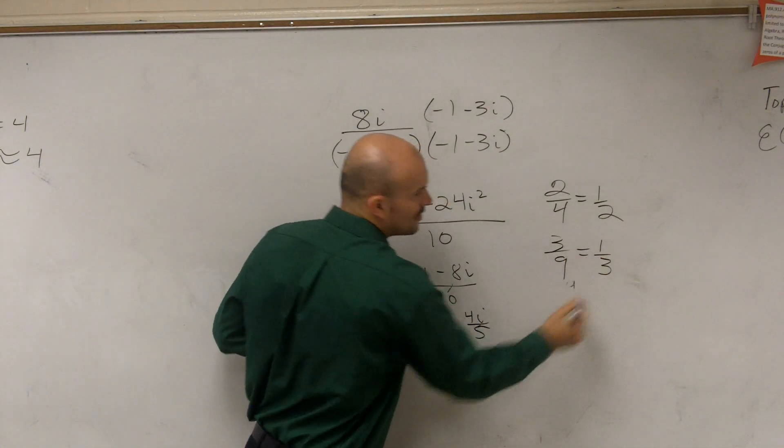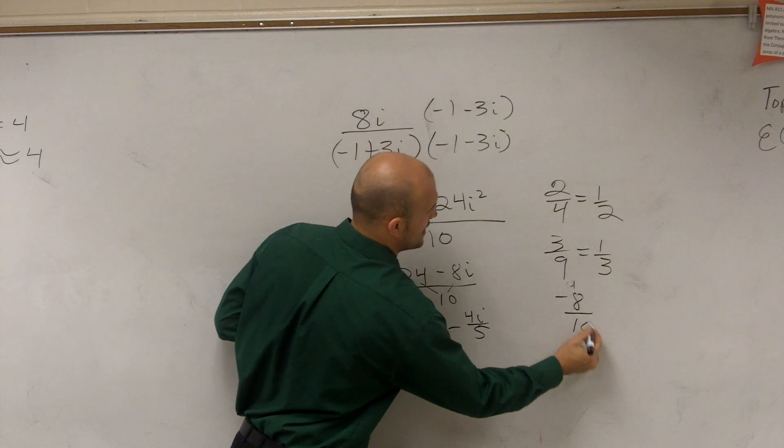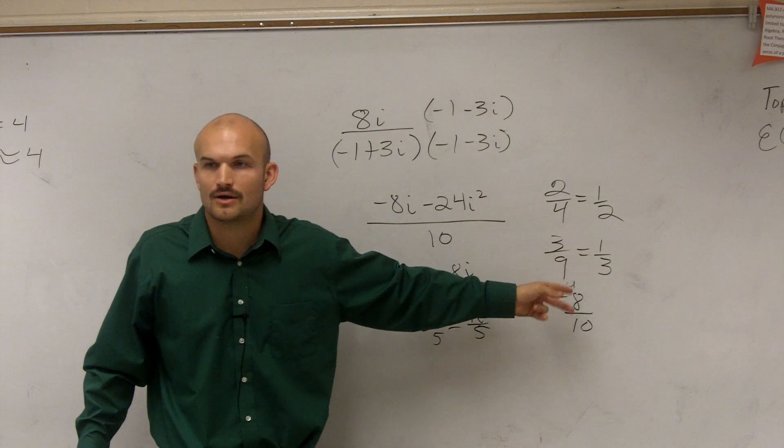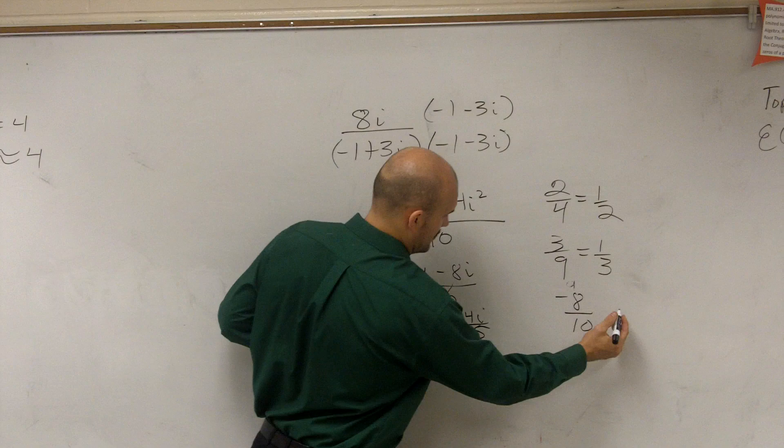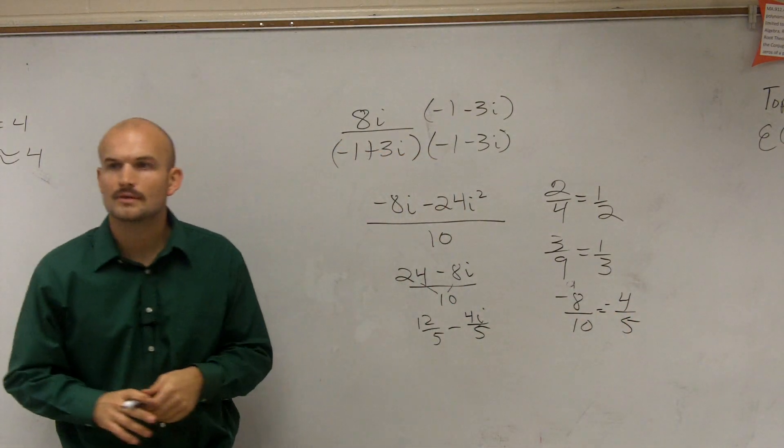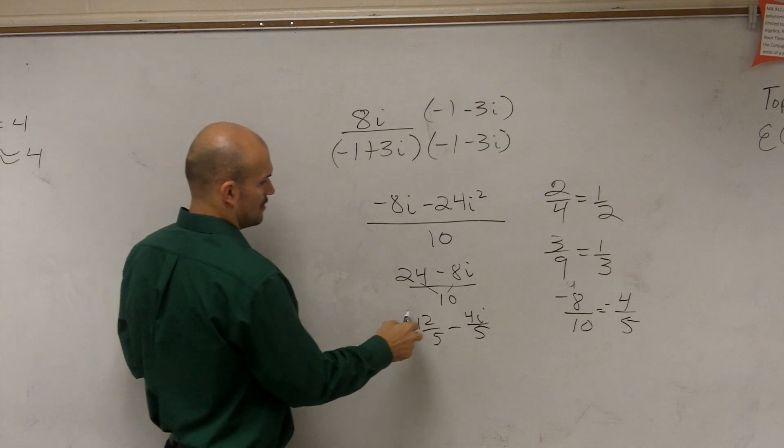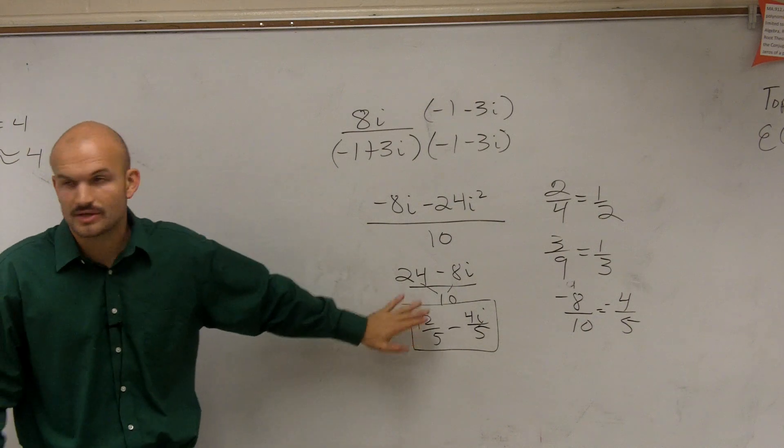So if I give you negative 8 divided by 10, what is the largest number that goes both into negative 8 and into 10? And you could say 2. So you divide by 2, and what you're left with? Negative 4 over 5. OK, yes? The answer what? I want an answer like that. I want your answer in complex number form.